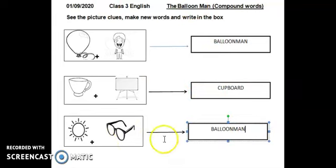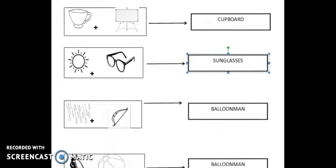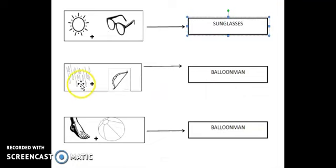So here, sun plus glasses, sunglasses. Jo dhoop mein pehenne wale chashme hoti hai, sunglasses. Moving on to the next one, rain plus bow, ya jo ribbon hota hai, isko bow hota hai. Rain plus bow, what will come? The rainbow.